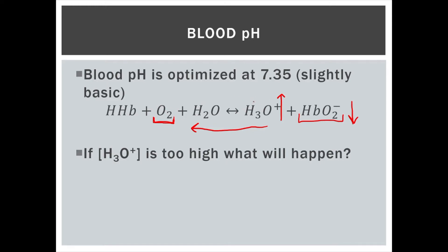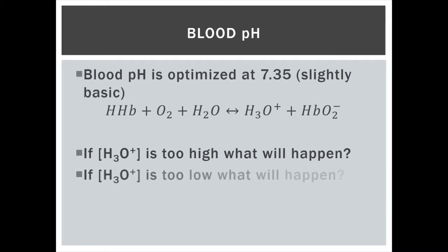If your body needs to release oxygen, increasing the amount of hydronium is not a bad thing because it causes the hemoglobin to release oxygen — but you only want to do that at certain parts of the body. On the flip side, if there's not enough hydronium and this concentration is too low, the equilibrium will shift the other way. You get more hemoglobin structure, but if you need to get rid of the oxygen, having a very low concentration of hydronium will actually make it less likely that your hemoglobin gives up its oxygen to the parts that need it.